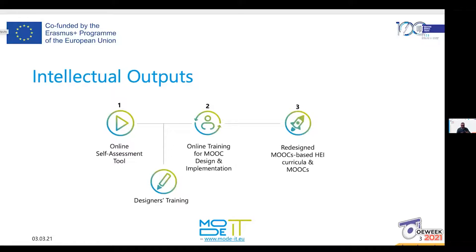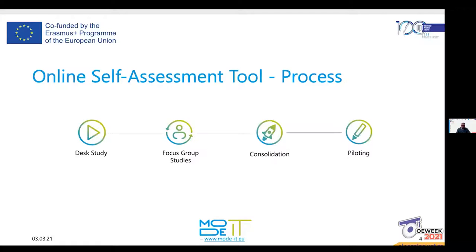In this presentation, I will briefly talk about the online self-assessment tool, the first intellectual output we focused on. Thanks to our colleagues from Kaunas, they did an extensive desk study — they went over the literature and prepared a list of competencies and competency areas for us. Later, each institution conducted focus group studies with local experts to evaluate the effectiveness and efficiency of these competencies, to identify which ones we should include in our tool.